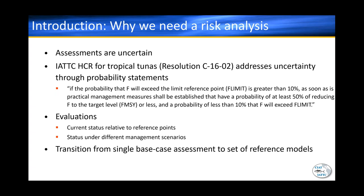So why do we need a risk analysis? Like all stock assessments, the IATTC assessments are uncertain — there's a lot of parameter uncertainty and model uncertainty — and we really need to address that and present it to managers. The IATTC has developed new harvest control rules that specifically include probability statements. For example, we have to evaluate whether fish mortality exceeds limit reference points with a certain probability, and if that occurs, additional action will take place. We evaluate current status relative to target and limit reference points, and also under different management scenarios to develop management advice.